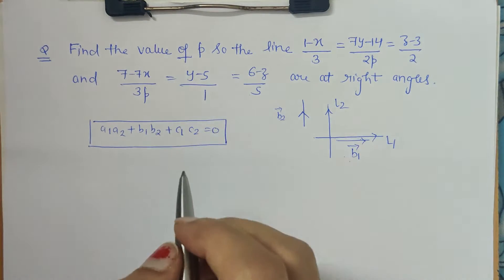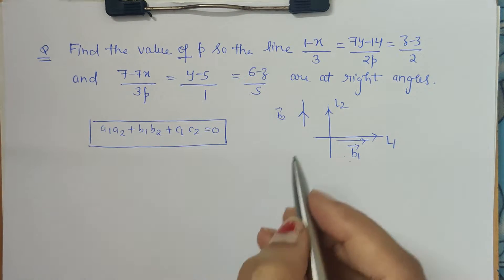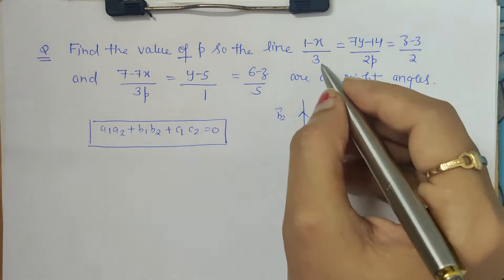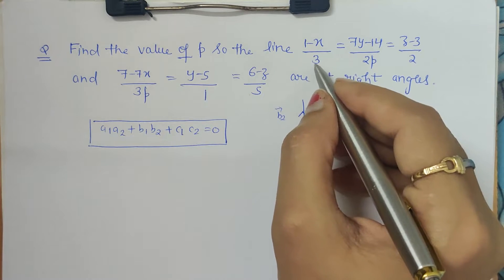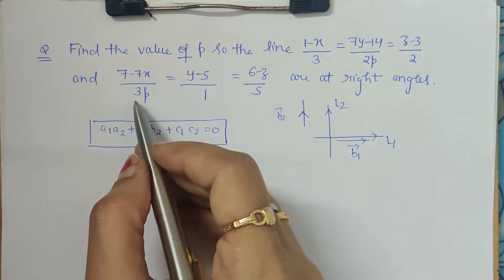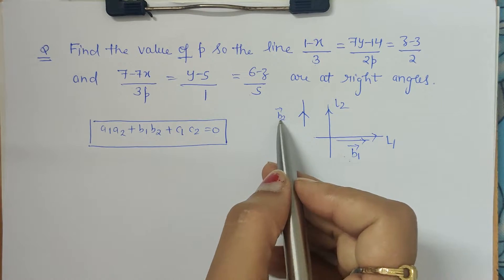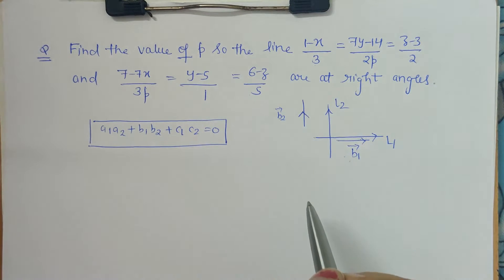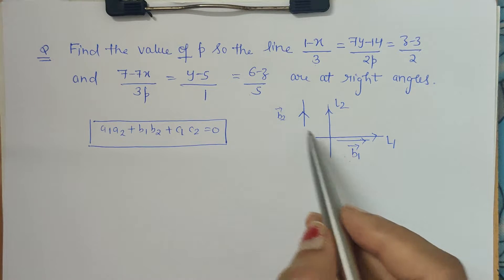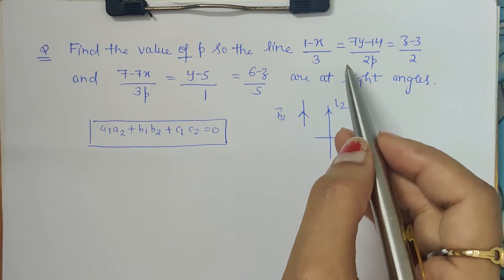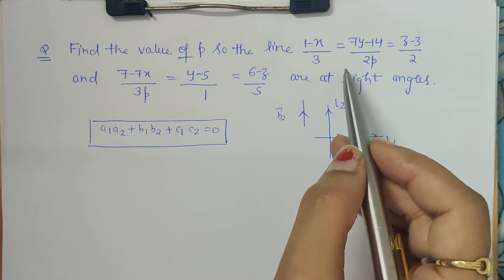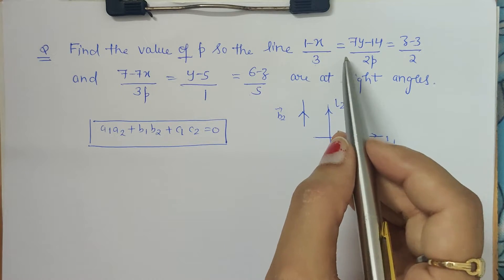This equation will help us find the unknown p. The direction ratios b1 are the denominators present in the first line, and b2 are the denominators from the second line. But before declaring the direction ratios, we first have to check if the given equation of the line is in standard form or not.